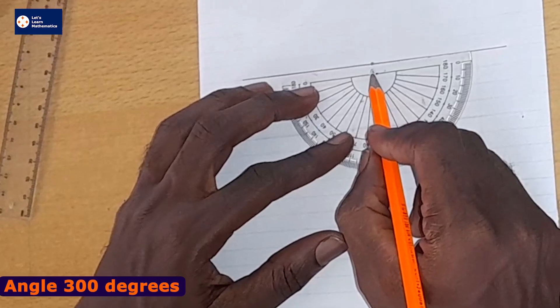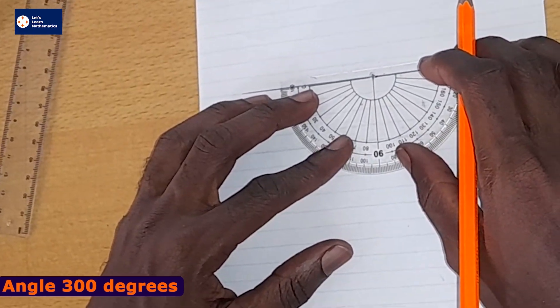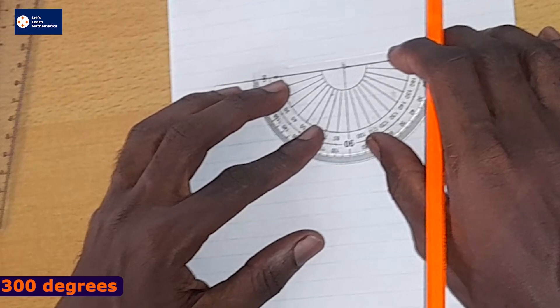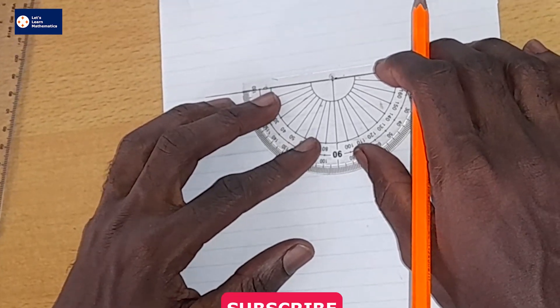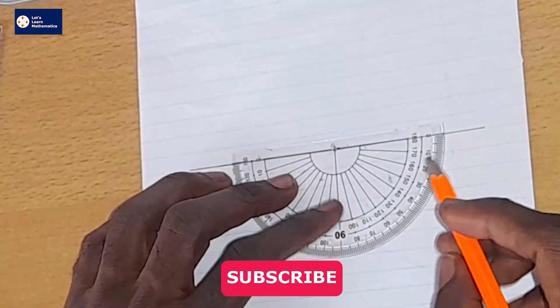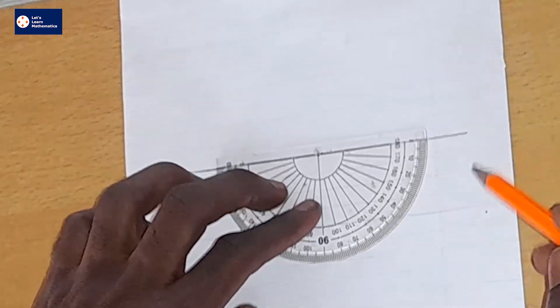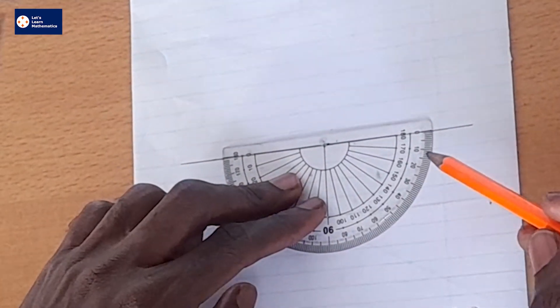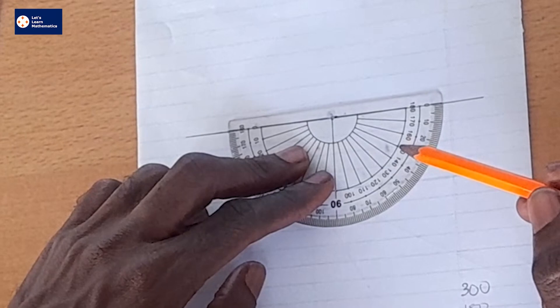Then my middle point of the protractor will need to be exactly on the point that I indicated on the line. So I want either 120 degrees or 60 degrees.